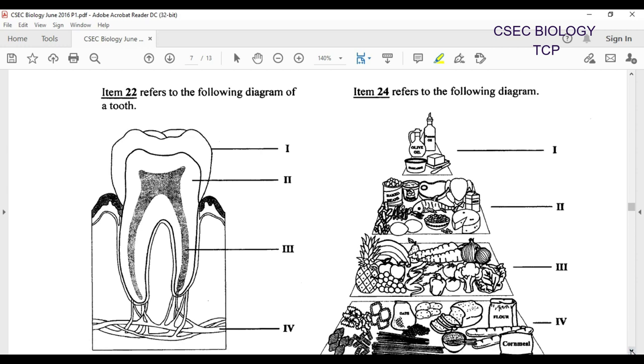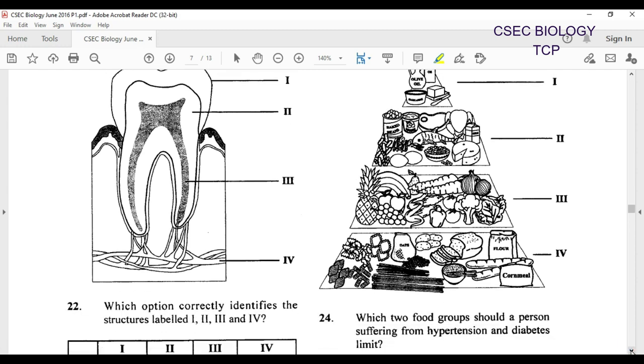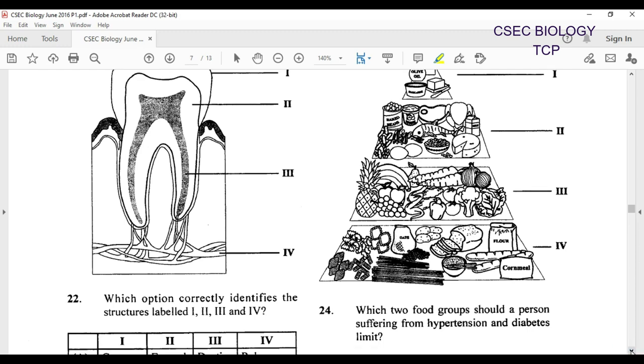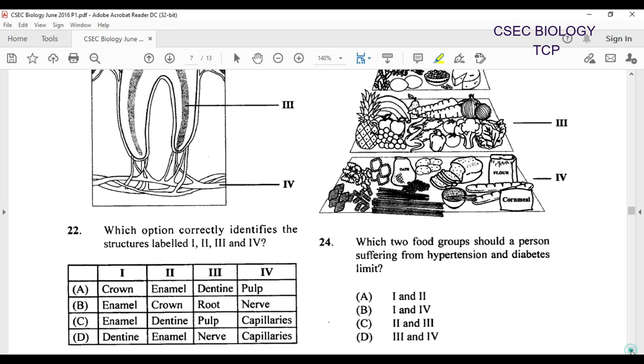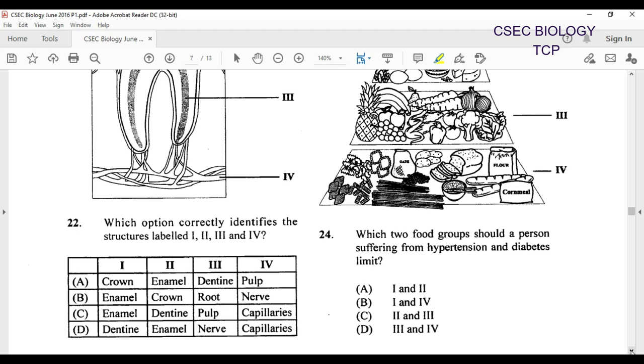Item 22 refers to the following diagram of a tooth. We're looking at the crown there at 1, and 2 there would have been more like dentine, and then we have pulp and blood vessel. Which option correctly identifies the structure labeled 1, 2, 3, and 4? Crown, enamel, dentine for 3, no. Pulp for 4, no. Enamel, crown, root, nerves, no. Enamel, dentine, pulp cavity, of course blood vessels, capillaries. I'd go with C. We could continue looking at D, but for me it's going to be C.